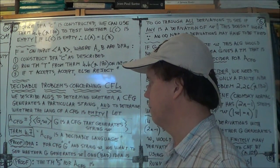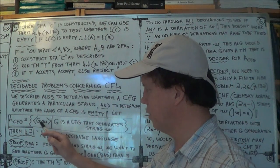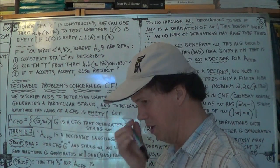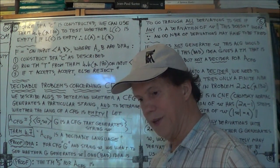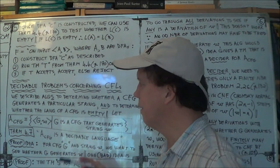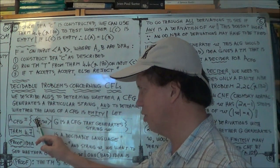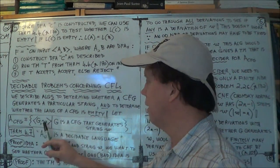And we call that language, we will find a Turing machine that decides that language. Right? And so then the problem, you know, does this grammar generate this string? That problem boils down to trying to find out whether this pair, for a given grammar or an arbitrary grammar, CFG, and...